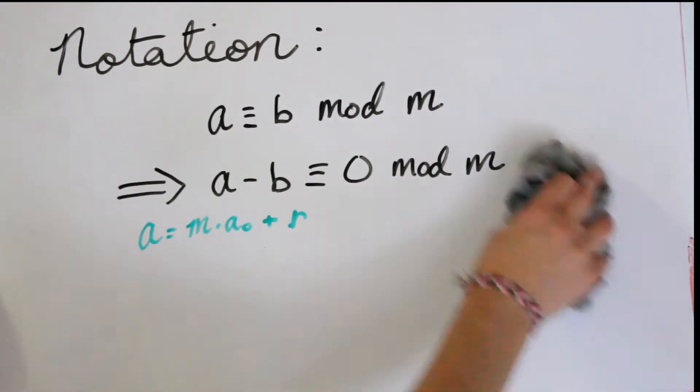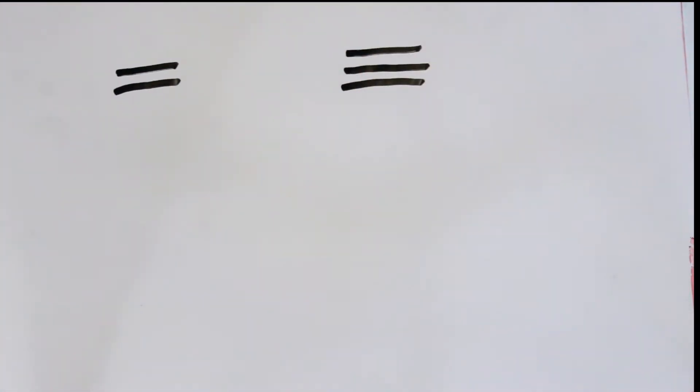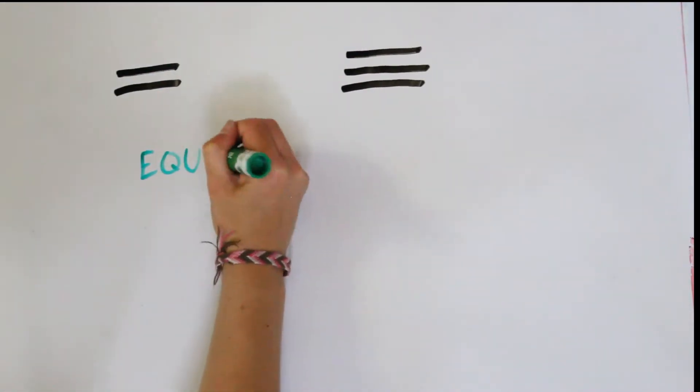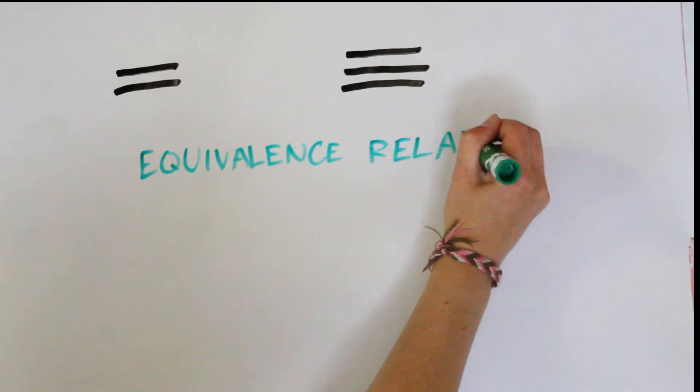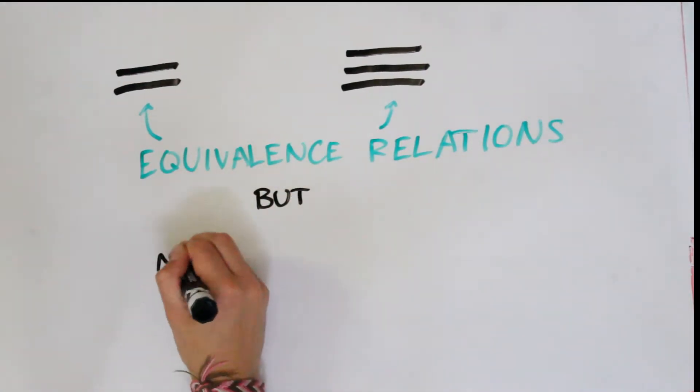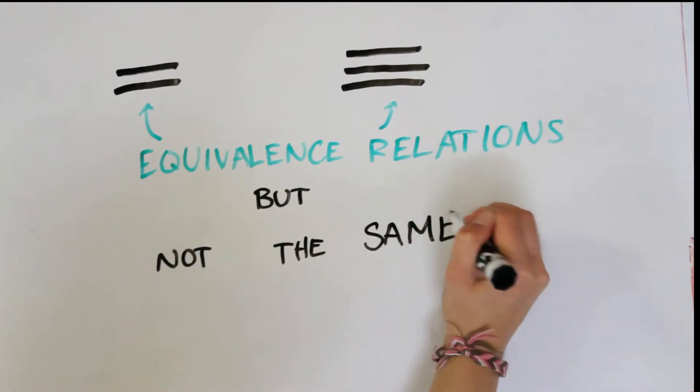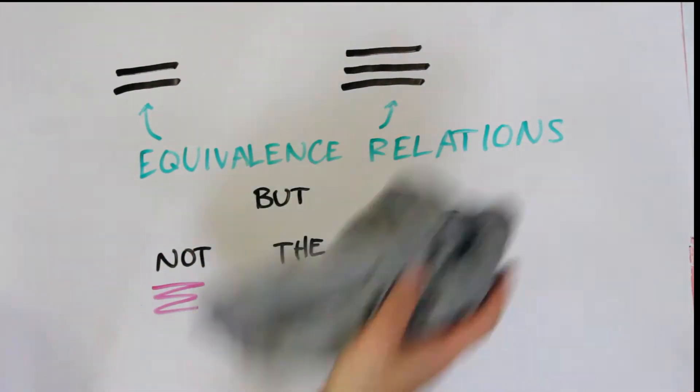This is a really important property of modular congruences and we're going to touch on this in later videos. Something really important to note at this point is that equals and congruent are actually not the same thing. They're very different, although they're both equivalence relations, which means that they have some similar properties. But they mean completely different things and they have to do with different sets of numbers, which is why 4 is congruent to 10 mod 3, but 4 does not equal 10.